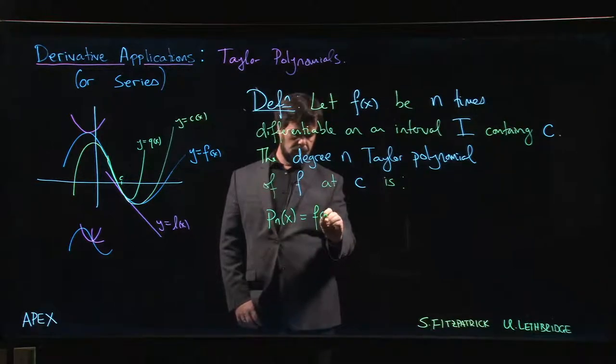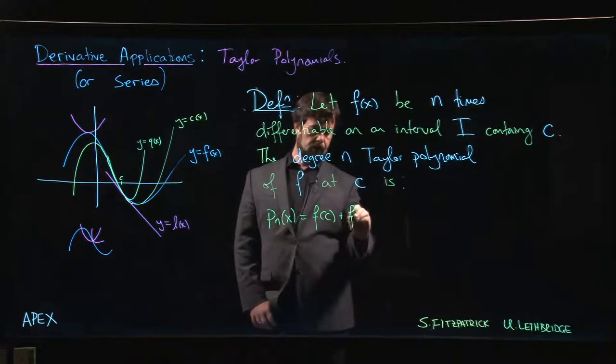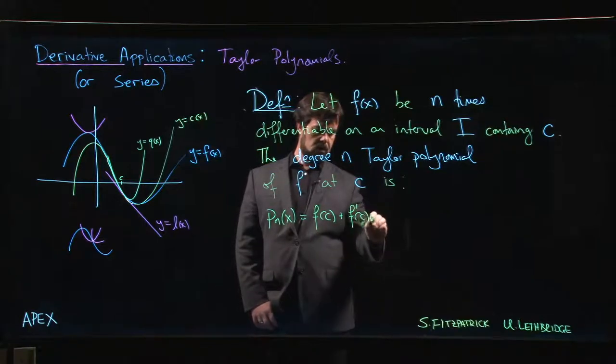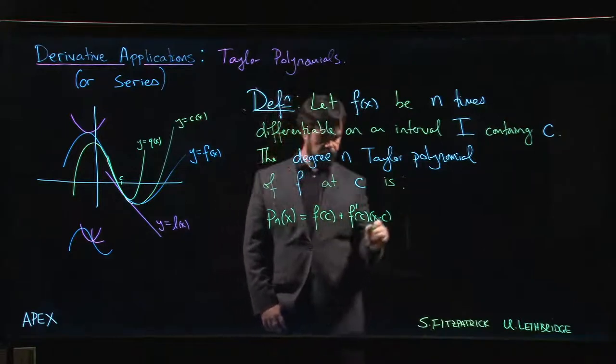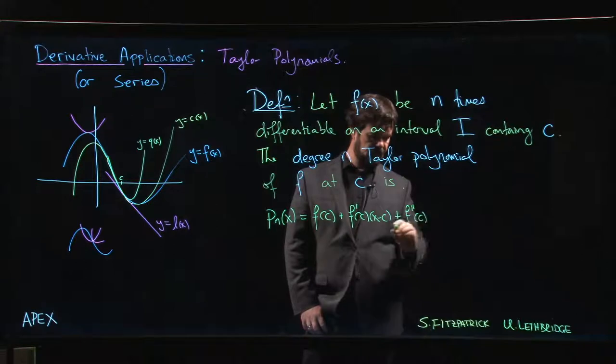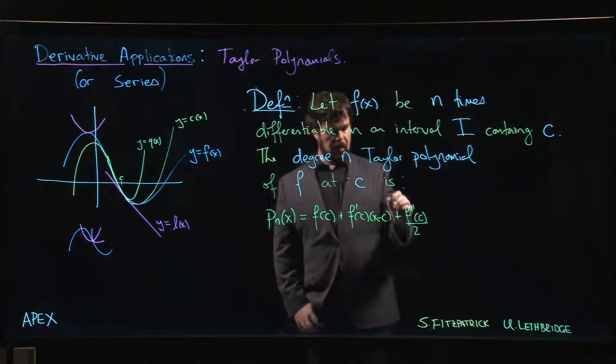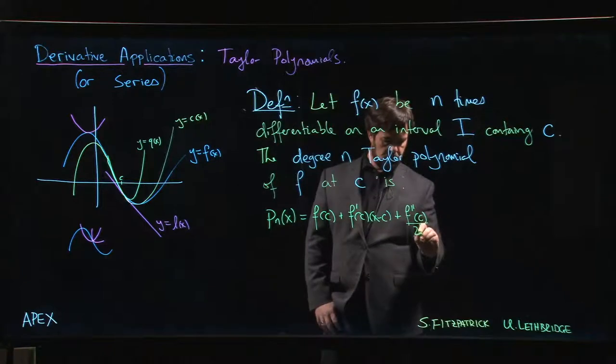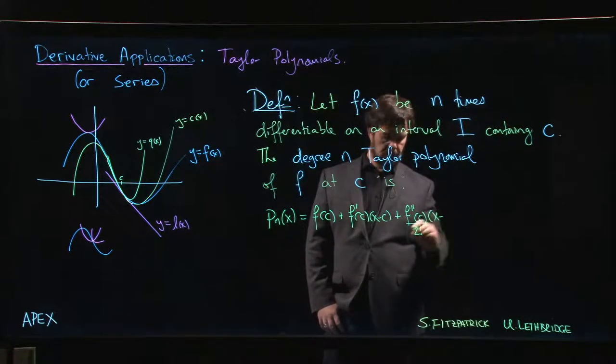It's going to be f(c) plus f'(c) times (x-c) - there's the linear approximation. Next term: f''(c) over 2, and I'm going to write that 2 as 2 factorial, you'll see why it helps us follow a pattern, times (x-c) squared.